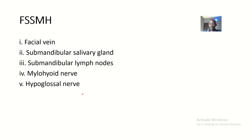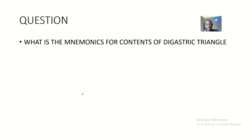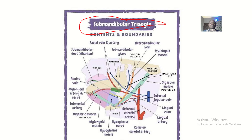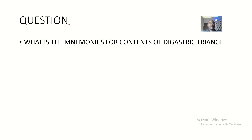Welcome everyone. Today we'll be talking about the contents of the digastric triangle. The digastric triangle is actually widely known as the submandibular triangle. So most of the times when you go online and search the digastric triangle, you might barely see useful stuff on it, because most people refer to it as the submandibular triangle — it's below the mandible.